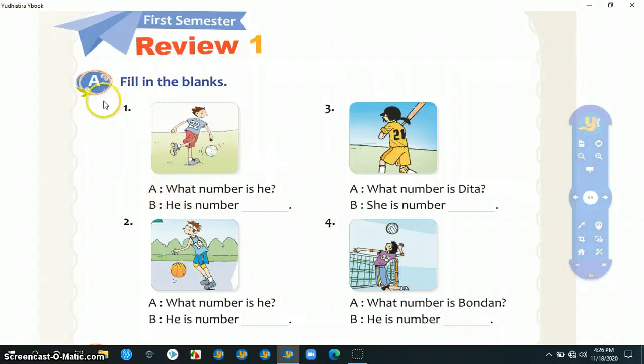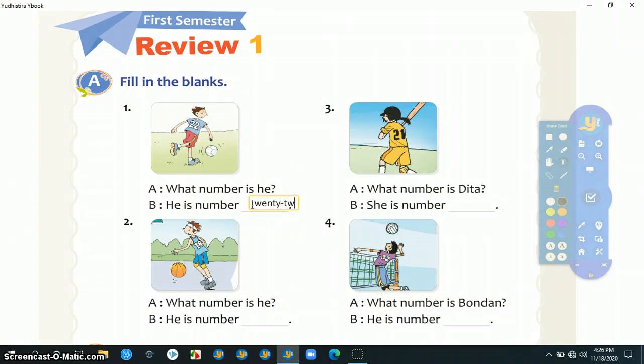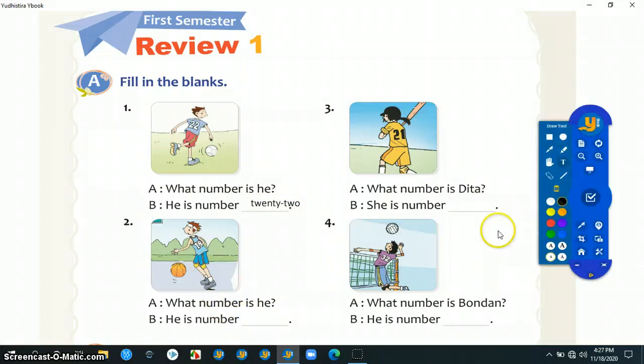Kita masuk ke poin pertama: fill in the blanks. Disini topik pembahasannya tentang angka atau number. Kita lihat nomor satu: what number is he? He is number 22. Kemudian number two: what number is he? He is number 21.